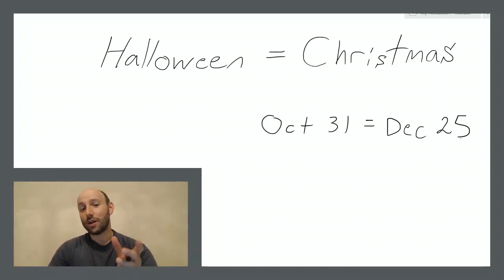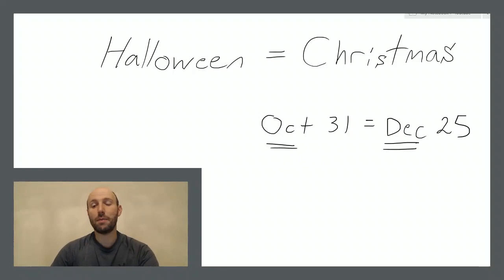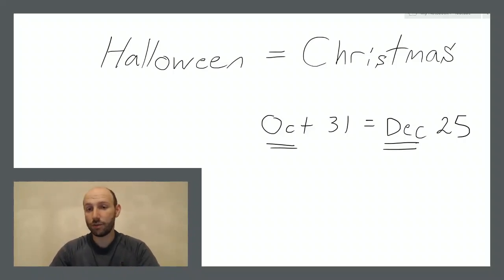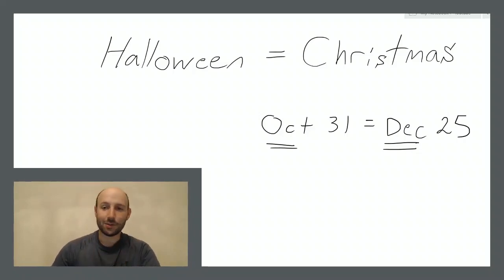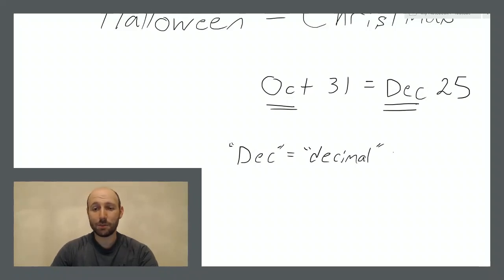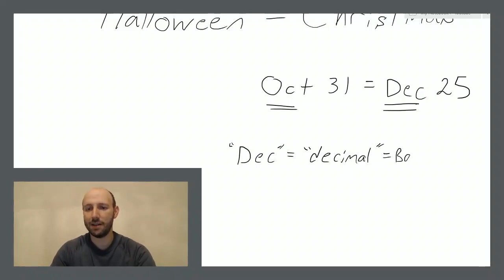The abbreviations OCT and DEC actually have a certain mathematical meaning. They refer to how you should interpret the numerical symbols in front of those letters. Taking that mathematical meaning into consideration, OCT 31 actually does equal DEC 25. DEC refers to the decimal number system — and decimal doesn't just mean numbers after a decimal point, it actually means base 10.